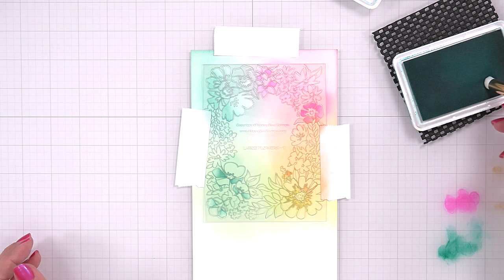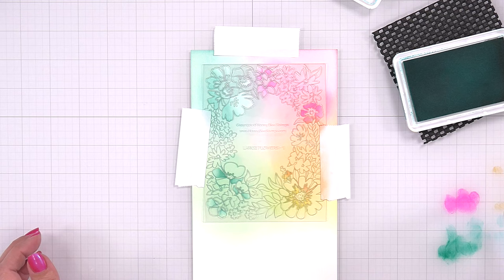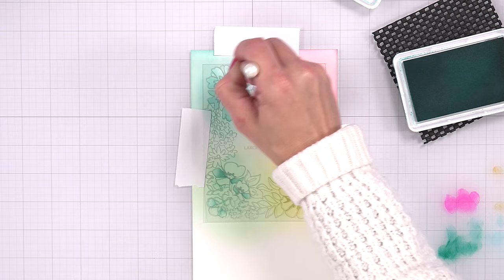Whenever I am blending over the open areas of the stencil, I try to consciously think about what color is next to it and underneath it, and I also want to kind of blend them together so it looks like a seamless blend.